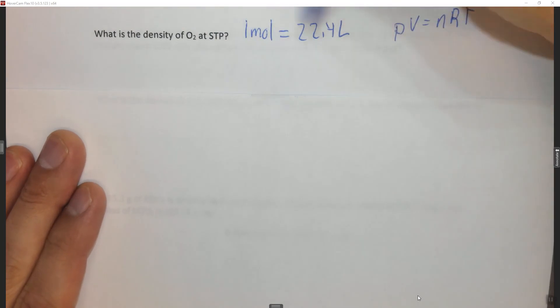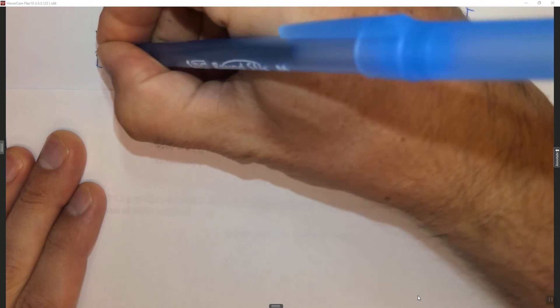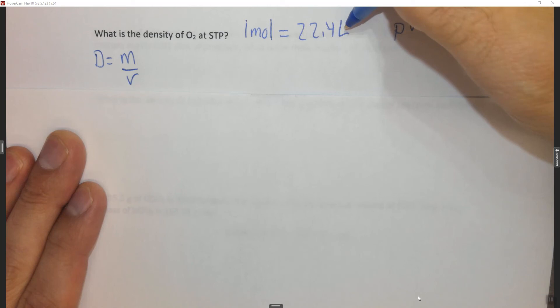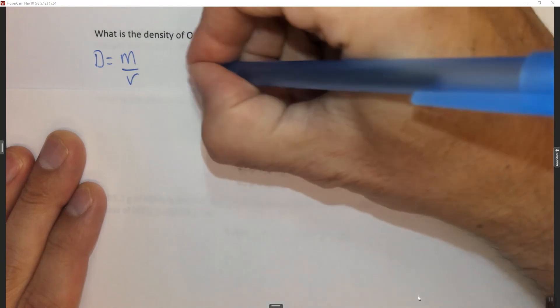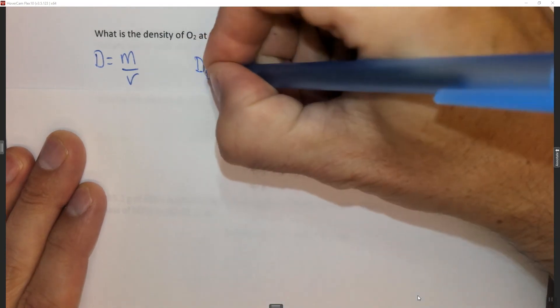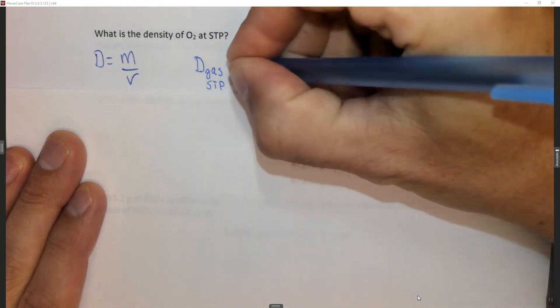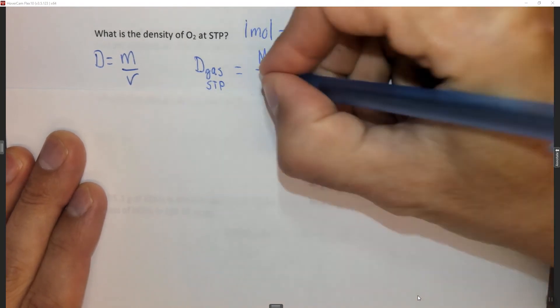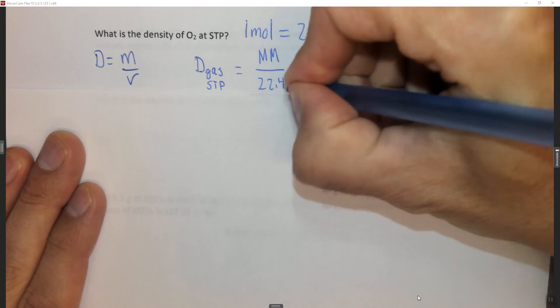Since we know the volume, and density equals mass divided by volume, in this case, 1 mole is 22.4 liters. So the density of a gas at STP is equal to the molar mass, the mass of 1 mole, divided by 22.4 liters.